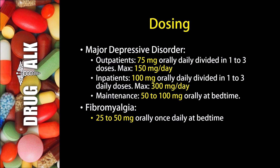For some examples of dosing with amitriptyline in major depressive disorder: if an outpatient is using this medication, they may try 75mg orally daily, divided in one to three doses, with a maximum dose of 150mg per day. For an inpatient, the dose would be increased to 100mg orally daily, divided in one or three daily doses, with a maximum dose of 300mg per day. The usual maintenance dose would be 50 to 100mg orally at bedtime.